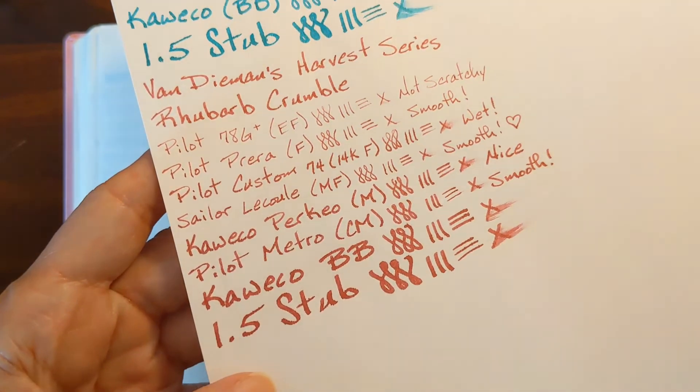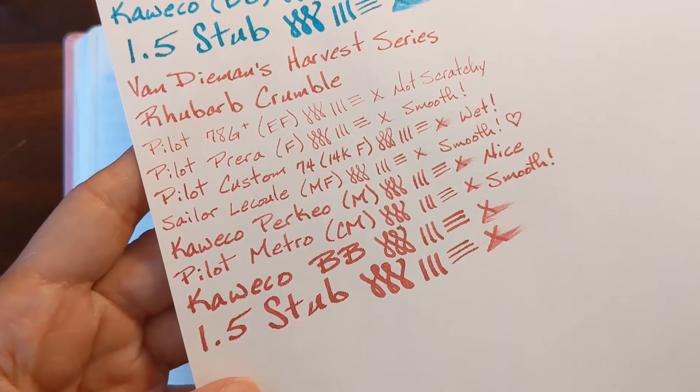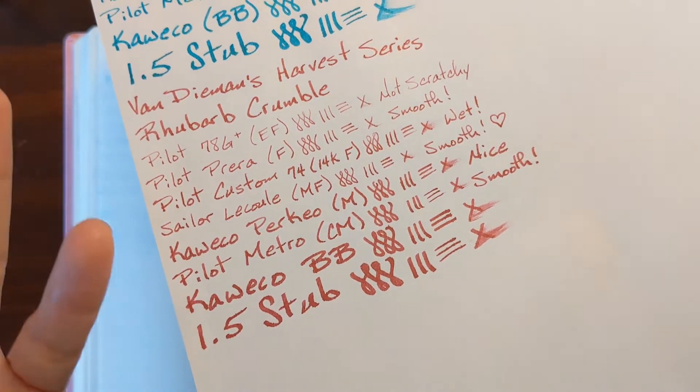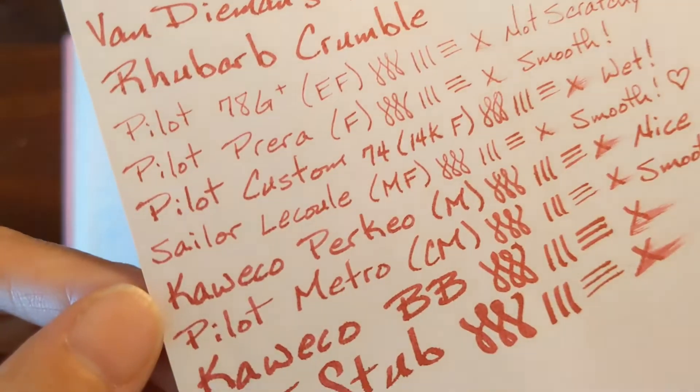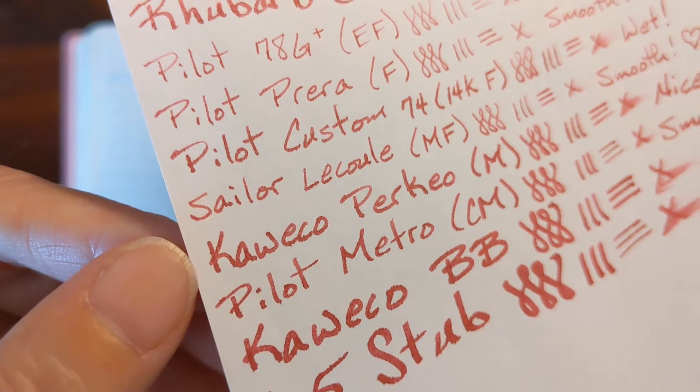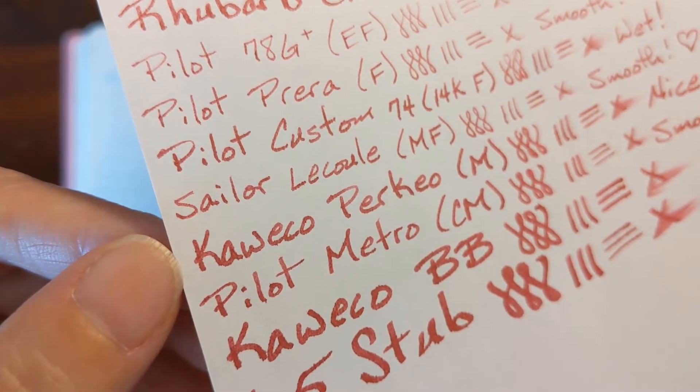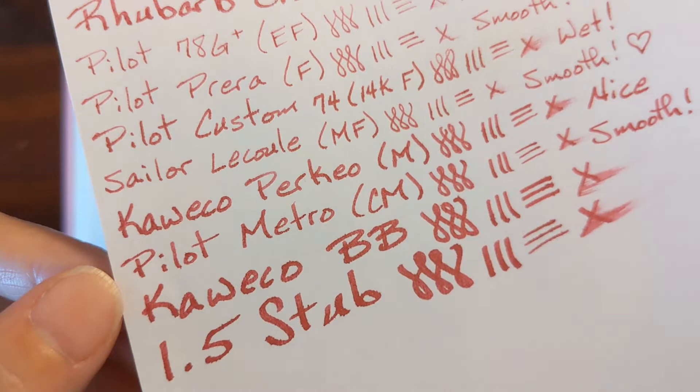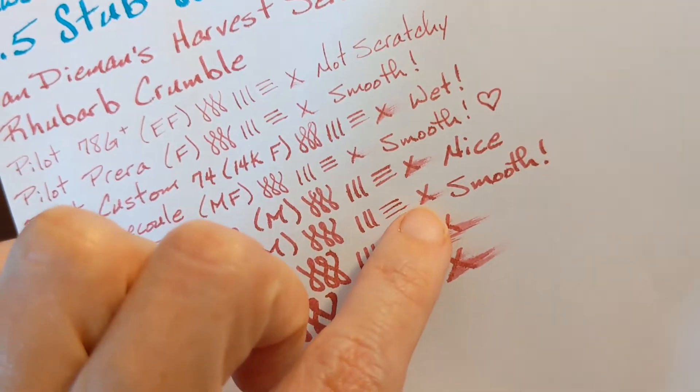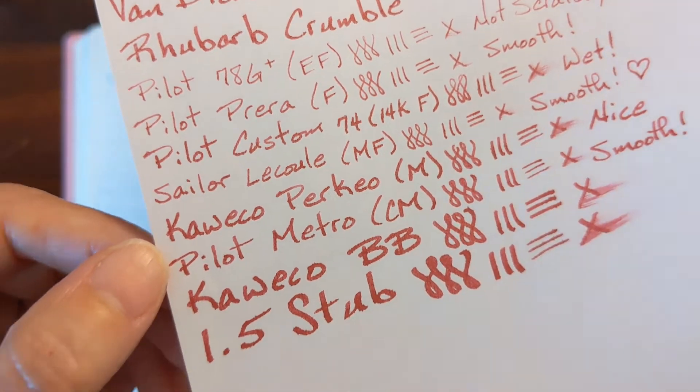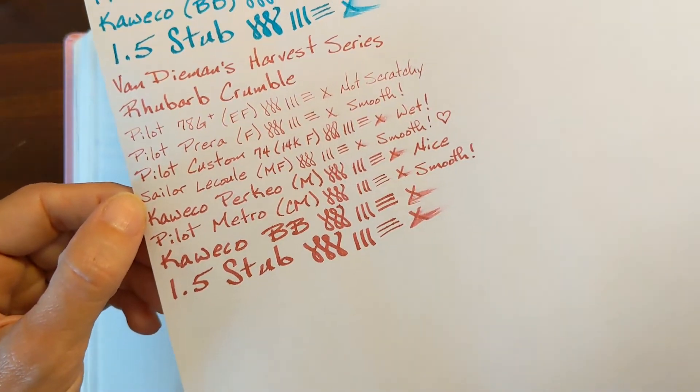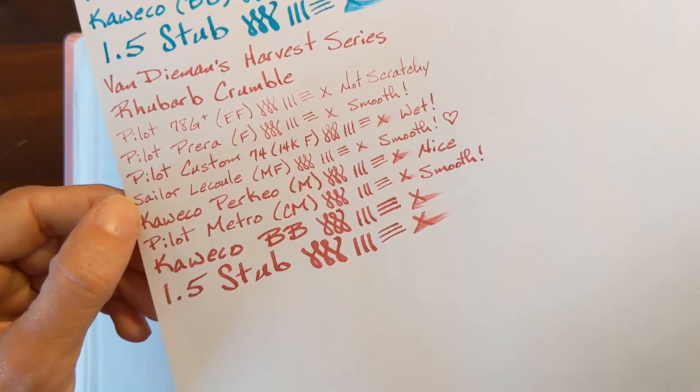I don't know how color accurate this is going to be, but it's kind of a rosy pink. The Perkeo was nice, but again, you see the edges look a little ragged. And even on the Metro, see how dry of a writer it is? It felt really smooth, but the edges just look a little ragged. This is a nice pink ink for a fine nib.